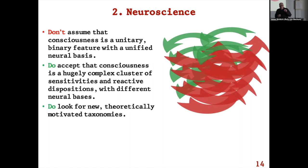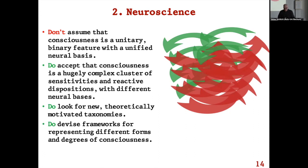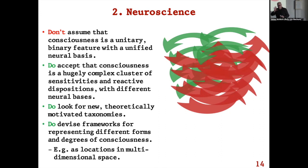Do look for new, better theoretically motivated taxonomies for kinds of consciousness. Devise frameworks for representing different forms and degrees of consciousness — different shapes that this complex of informational and reactive cycles may take. Perhaps we might model them as locations in a multi-dimensional space. Different forms of consciousness might even start to have numbers attached to them. Getting away from the idea that introspection of these strange properties gives us a basis for taxonomizing what the brain is doing.